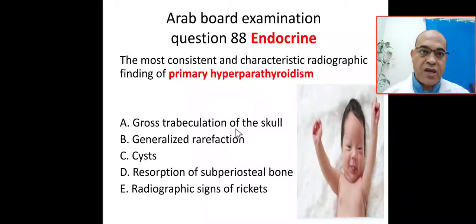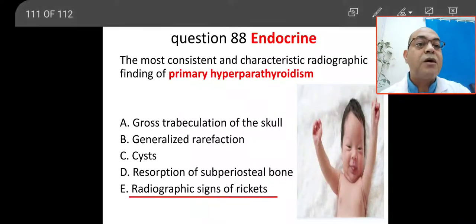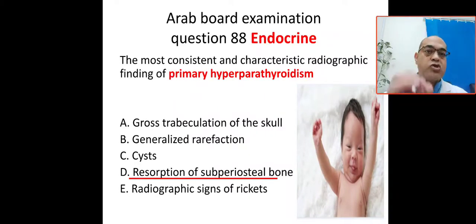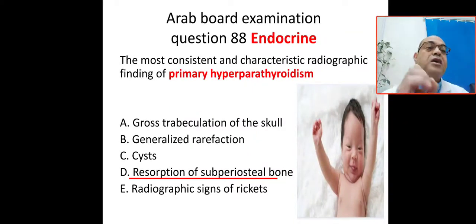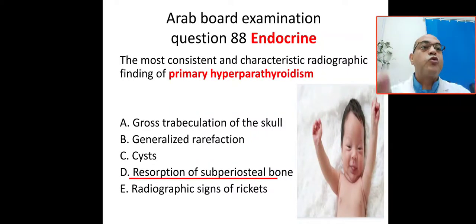Gross trabeculation of the skull is not the answer. Generalized rarefaction is not the answer. Option D is resorption of the sub-periosteal bone — this is the correct answer. The most consistent and characteristic radiographic finding of primary hyperparathyroidism is resorption of sub-periosteal bone. This is common in the Arab board exam, so don't forget this answer.